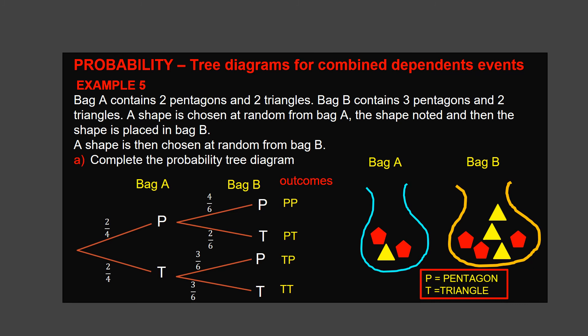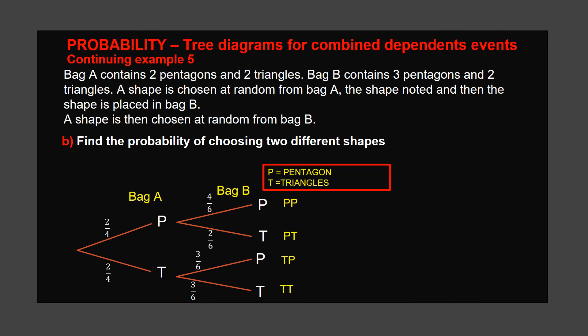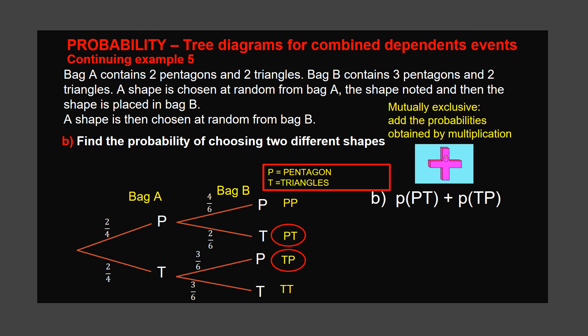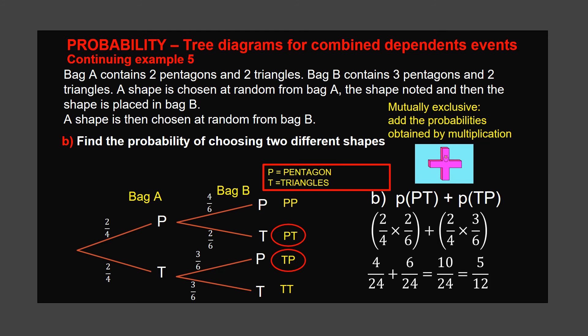There are four total outcomes. B: Find the probability of choosing two different shapes. There are two possibilities: pentagon and triangle, or triangle and pentagon. It's a mutually exclusive event. Along the branch, first multiply their probabilities, then add. The answer is 5 over 12.